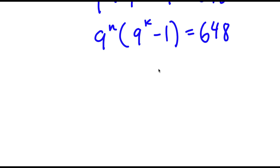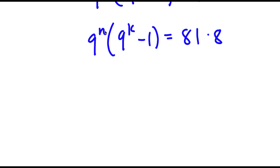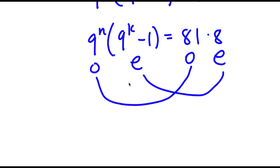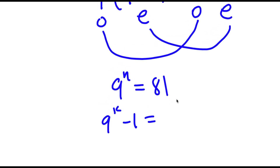And 648 I can rewrite as 81 times 8. So now 9 to the power of n times 9 to the power of k minus 1 is equal to 81 times 8. Now, 9 to the power of any number is odd, and an odd number minus 1 is going to be an even number. So 9 to the power of n is odd and 9 to the power of k minus 1 is even. Since we have odd times even equals odd times even, we can set the odd numbers equal to each other and the even numbers equal to each other. So 9 to the power of n is equal to 81, and 9 to the power of k minus 1 is equal to 8.